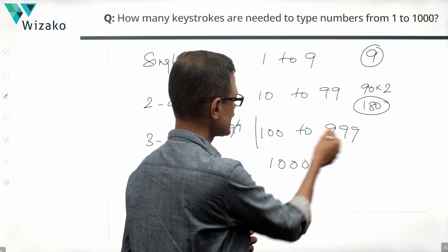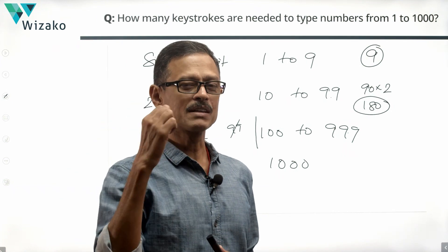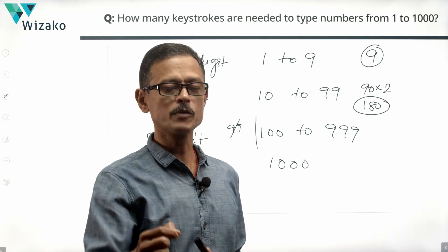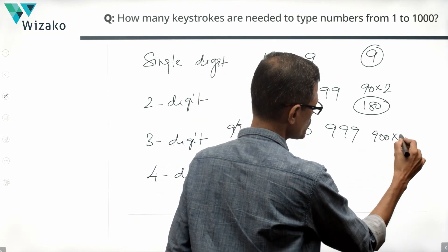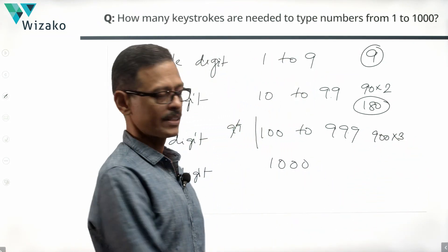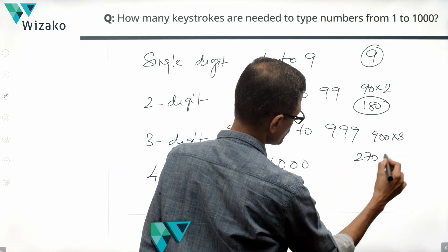Another way of reasoning it out is 999 minus 100 is 899. We subtracted the 100, but 100 is a three digit number which should be added. Therefore adding that will leave us with 900 three digit numbers. Each would require three keystrokes. Therefore the number of keystrokes required for all three digit numbers is equal to 2700.